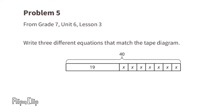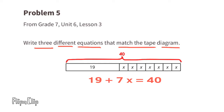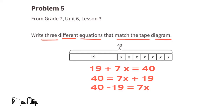Problem number five from 7th grade Unit 6 Lesson 3. Write three different equations that match the tape diagram. The rectangle represents 19, plus seven boxes each containing x, representing 7x. The total is 40, giving us 19 plus 7x equals 40. We can rewrite that as 40 equals 7x plus 19. We can also subtract 19 from each side to find a third equation that matches the tape diagram.